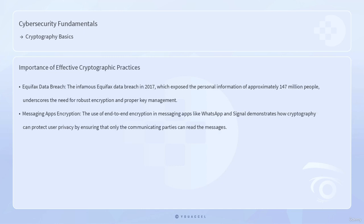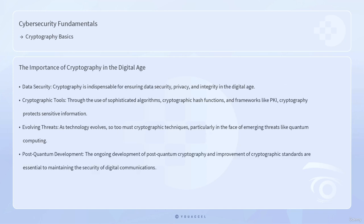Real-world examples highlight the importance of effective cryptographic practices. The infamous Equifax data breach in 2017, which exposed the personal information of approximately 147 million people, underscores the need for robust encryption and proper key management. Similarly, the use of end-to-end encryption in messaging apps like WhatsApp and Signal demonstrates how cryptography can protect user privacy by ensuring that only the communicating parties can read the messages.